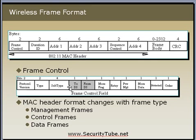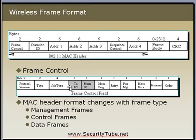Next come the To DS and From DS fields. If a packet is going from the client to the access point, the To DS field will be set to 1. If a packet is coming from the access point to the client, the From DS field will be set to 1. For management and control packets, and for ad hoc connections, both To DS and From DS fields will be 00.